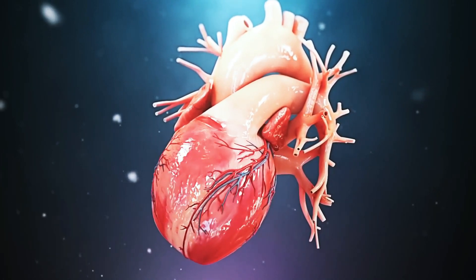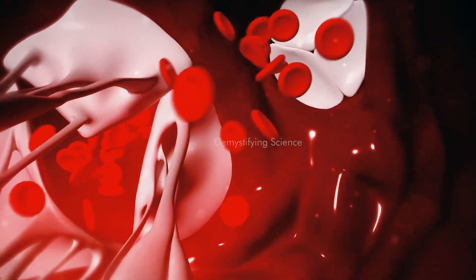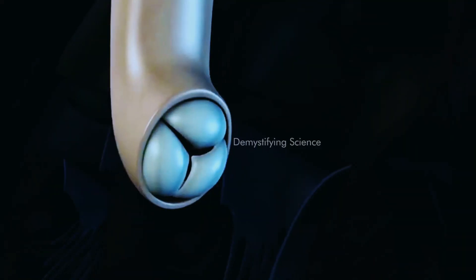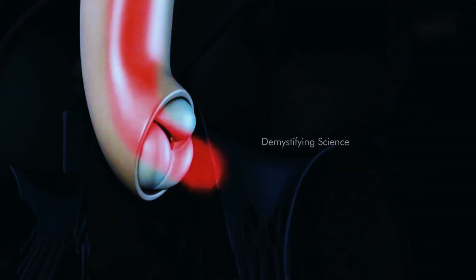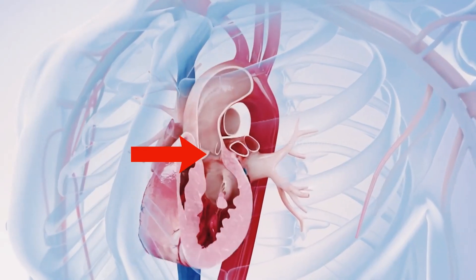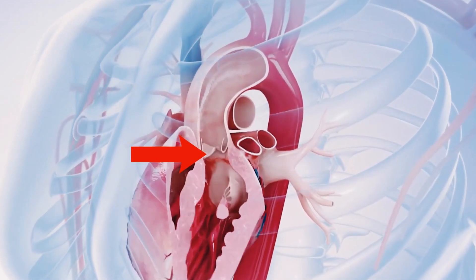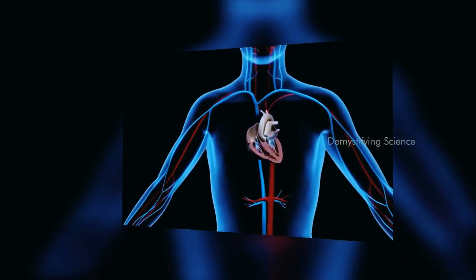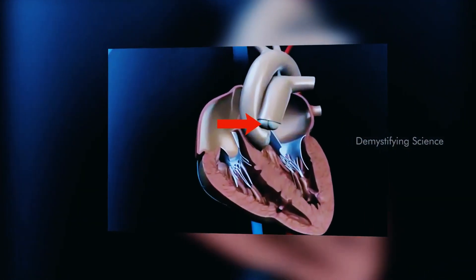Ventricles: The right ventricle pumps deoxygenated blood to the lungs via the pulmonary artery. The left ventricle pumps oxygenated blood to the body via the aorta. The left ventricle has thicker walls than the right ventricle because it pumps blood to the entire body, requiring more force.